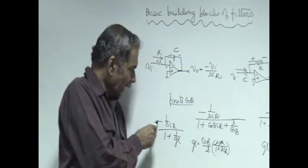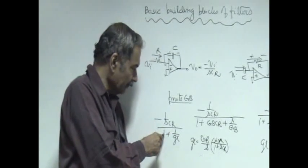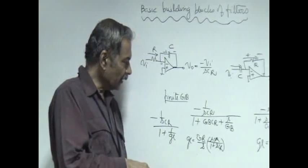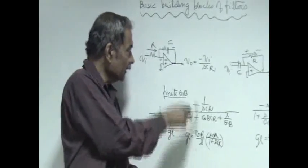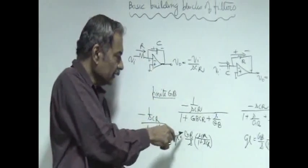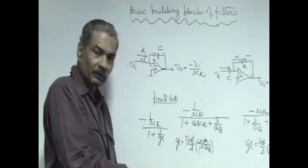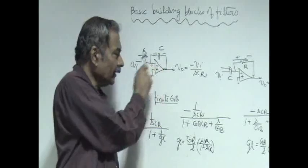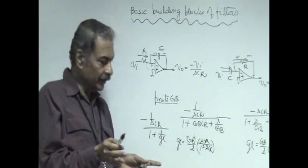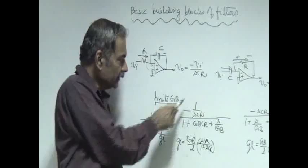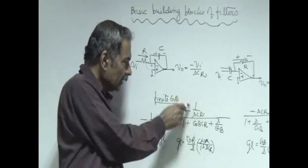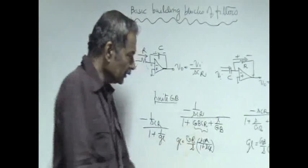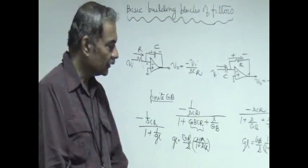It is the same thing minus 1 by sCR divided 1 plus 1 over g_l is the actual transfer function of the system. If you substitute g_l which is the loop gain, which is gain of the op-amp which is g_v by R into sCR by 1 plus sCR, this is going to act in the loop like a high pass filter. The magnitude error is controlled by this g_v into sCR which is fixed.